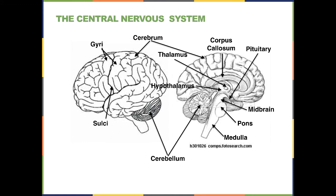The white matter will frequently glisten and shine, almost greasy, because the myelin in the axons has a great deal of fat content. Now looking at this diagram carefully: in the top right corner is the pituitary gland, which we'll discuss in the endocrine system. Just below that is the midbrain, which begins the brain stem. The brain stem has three parts: the midbrain (the highest part), the pons, and the medulla.